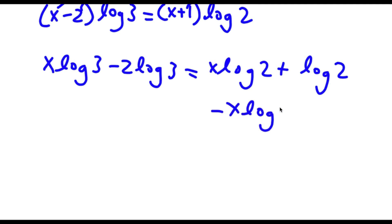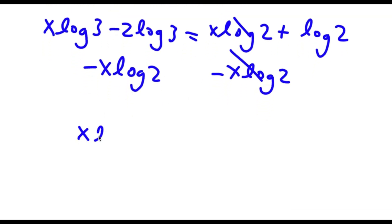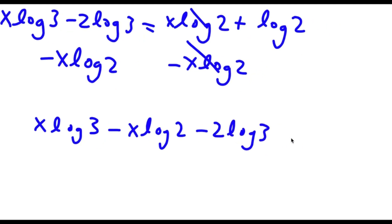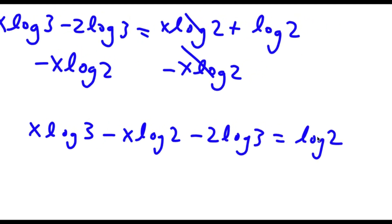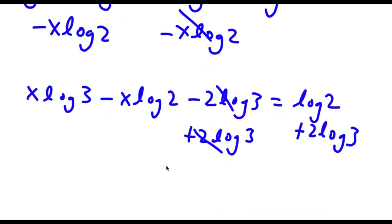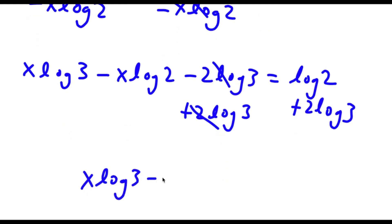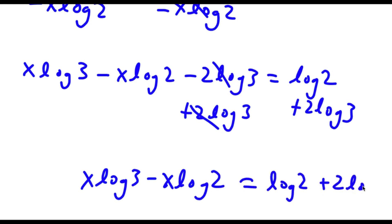Now I'm going to subtract x log 2 from both sides. These two cancel out and now I'm left with x log 3 minus x log 2 minus 2 log 3 is equal to log 2. Now I'm going to add 2 log 3 on both sides. These two cancel out and now I'm left with x log 3 minus x log 2 is equal to log 2 plus 2 log 3.